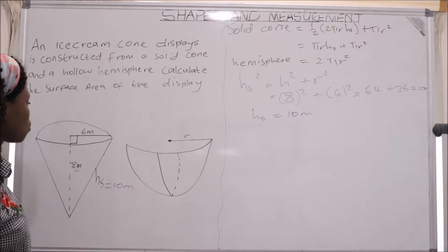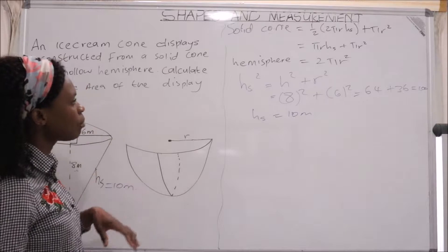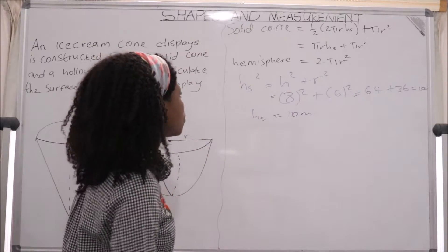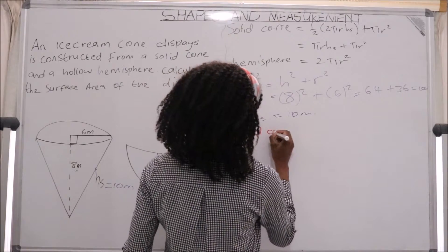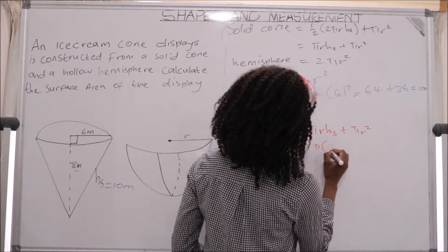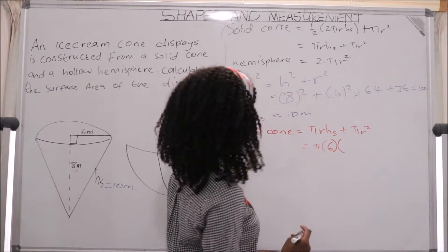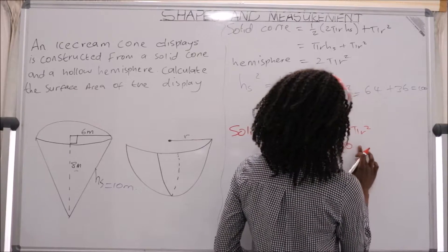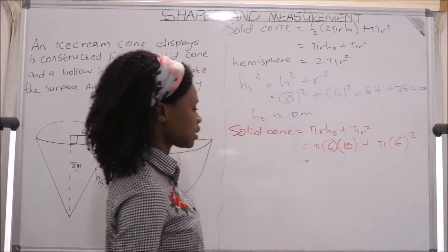To calculate the surface area we calculate the solid cone part and the hemisphere part separately, then combine them. For the solid cone, using πr·hs + πr²: our radius is 6 meters and hs is 10 meters. So we have π × 6 × 10 + π × 6², which gives us the surface area of the solid cone.